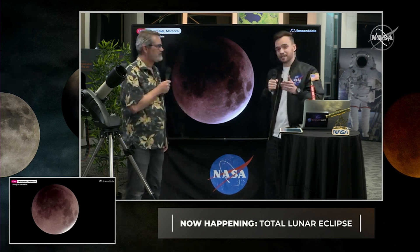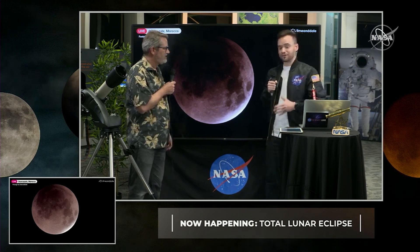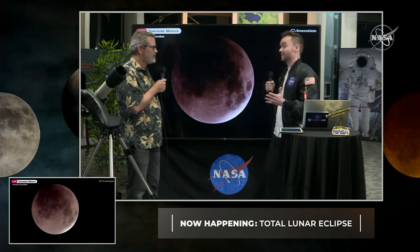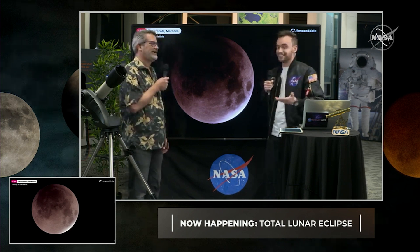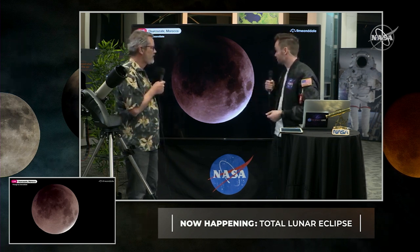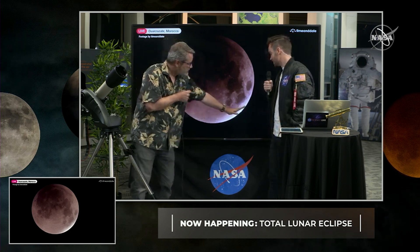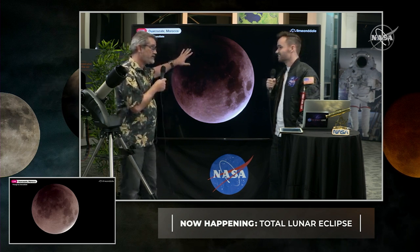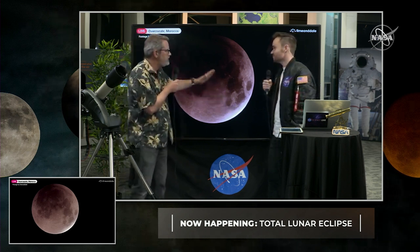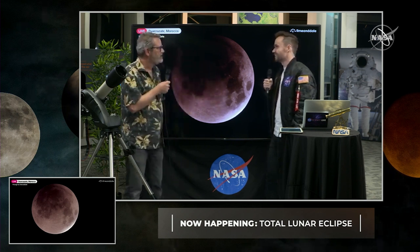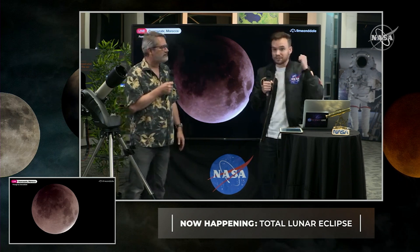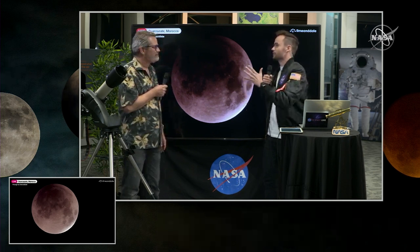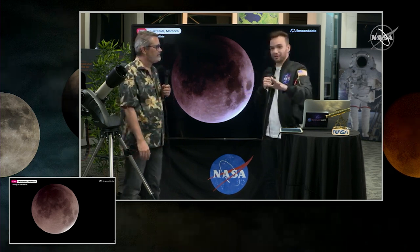Looking at my watch right now, it is 11:29 here on the East Coast — this is the moment we've all been waiting for, totality. There's just that last little bit of sliver of light. I wish we could be doing this from outside here at Goddard — it would be really nice, but this is still an incredible view from Ouarzazate. This bright part is just because of the difference in exposure — this part of the moon is closer to the center of the shadow, that's where it's darker. Throughout totality you'll see a gradient from one side to the other. This is the moment to run outside, keep us in your back pocket on your headphones, take some pictures and share them with us.